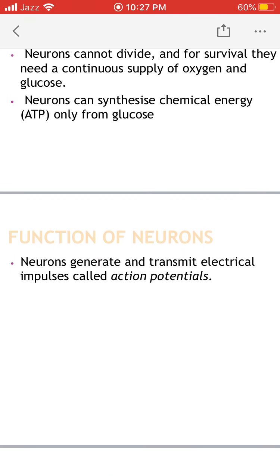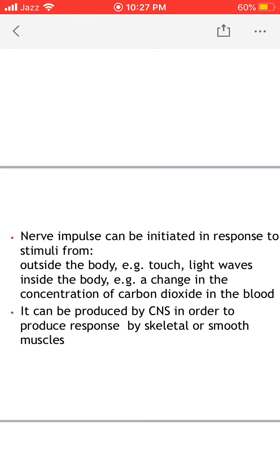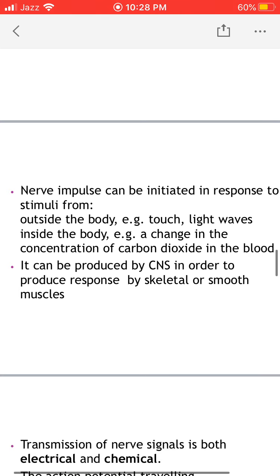The function of neurons is to generate and transmit electrical impulses called action potentials. The nerve impulse or action potential can be initiated in response to stimuli from outside the body — such as touch, light waves, sound waves, or chemical substances on the tongue — or from stimuli inside the body, such as changes in carbon dioxide concentration in the blood or changes in blood pressure. Nerve impulses can also be produced by the central nervous system to generate a response from skeletal muscle, smooth muscle, or heart muscle.